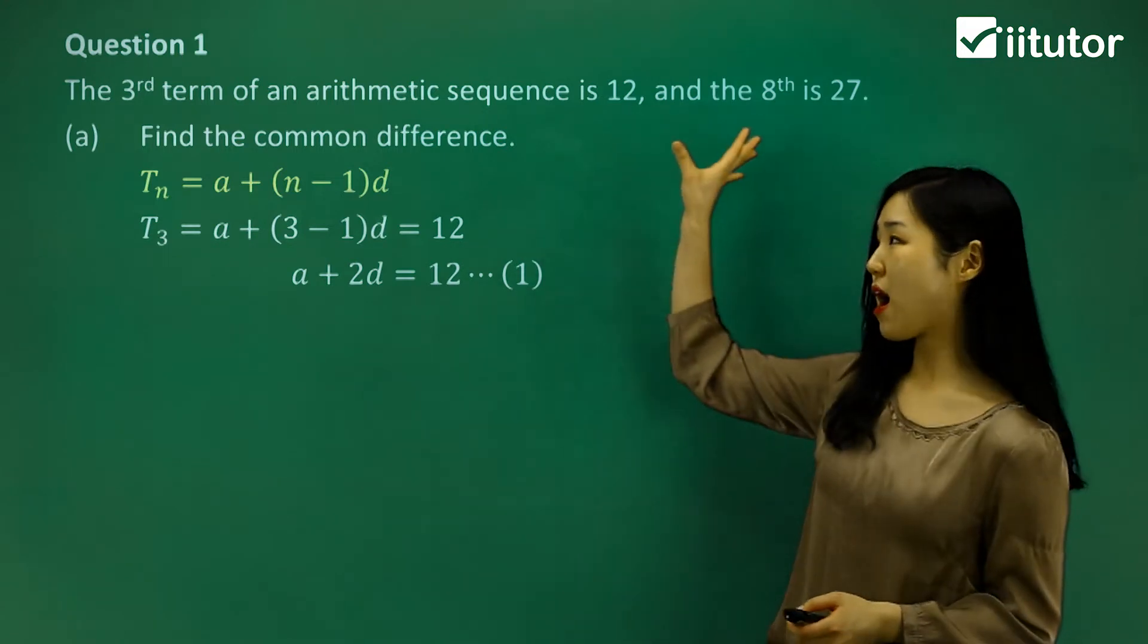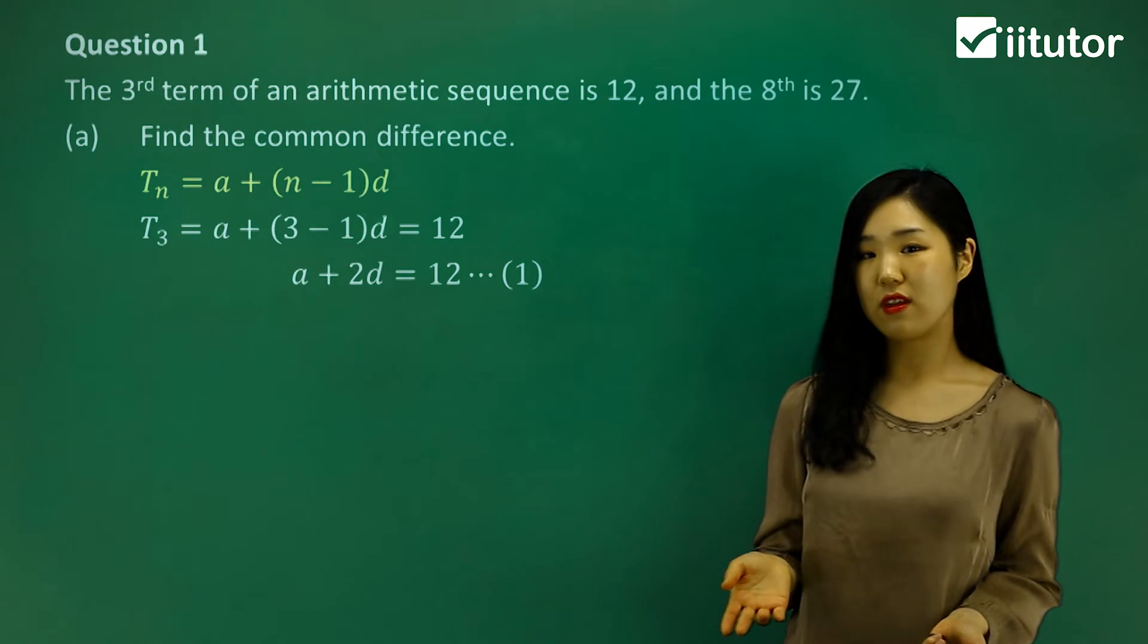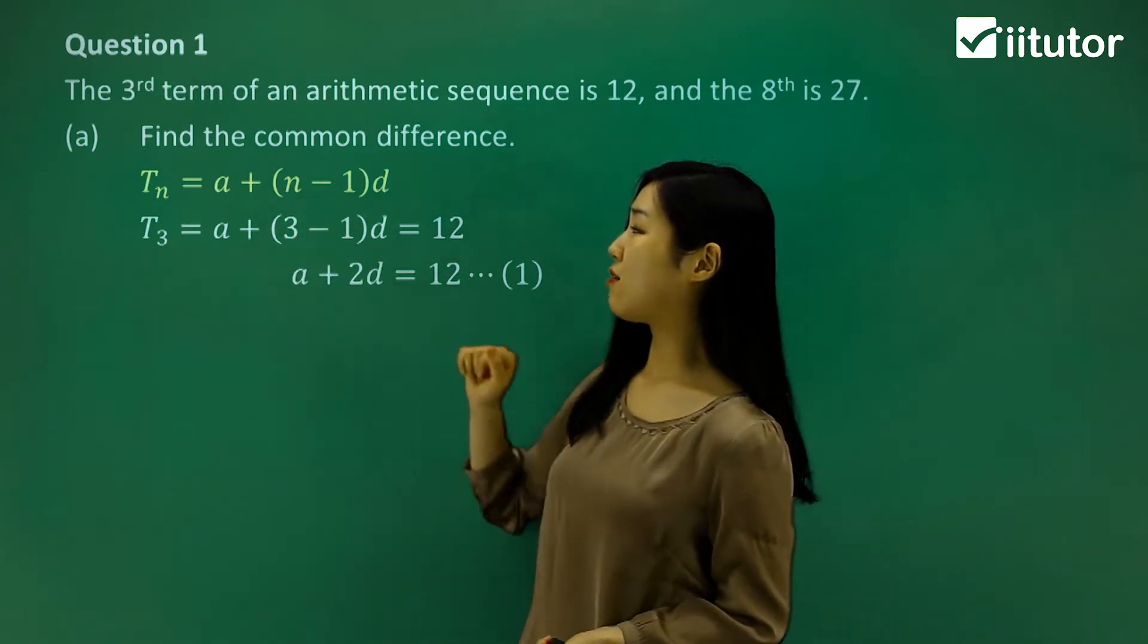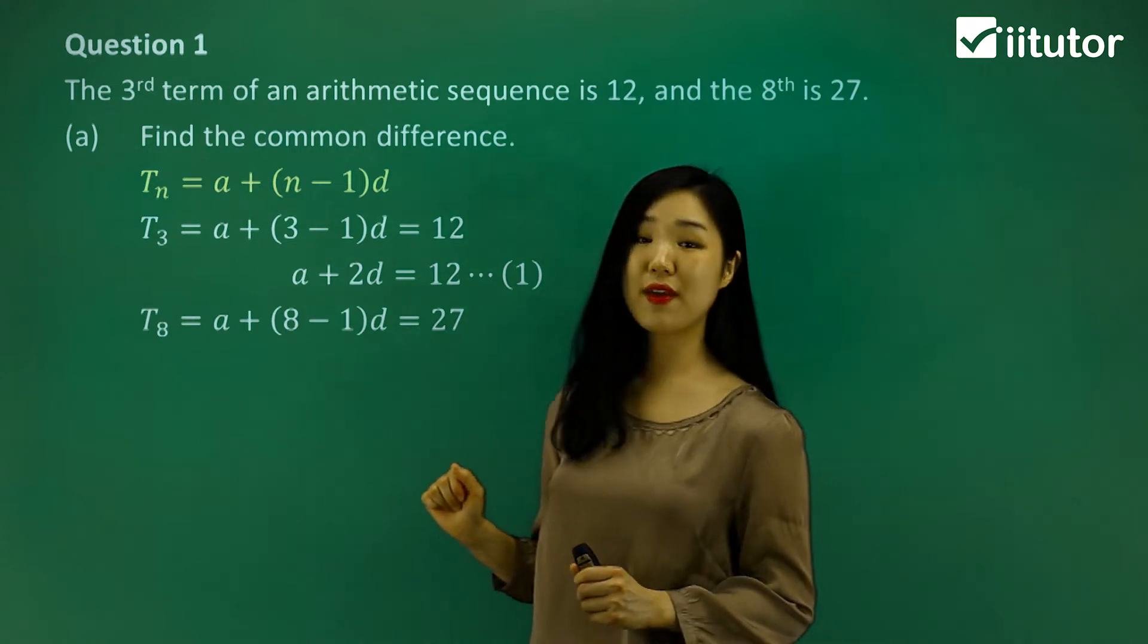Now let's look at the second part of information. The eighth term is 27. So again I'm going to use my Tn formula and replace n with 8 this time because we're looking at the eighth term.